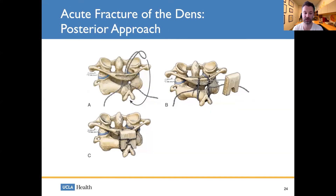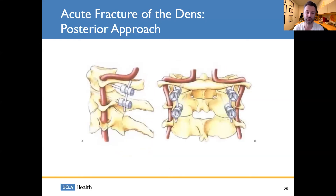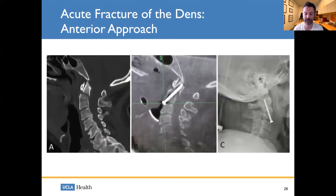It is important for these fractures to heal well. For internal fixation, the tried-and-true approach is wiring of C1 and C2 lamina with a piece of iliac crest bone in between, known as the Gallie fusion. A C1-C2 Harms fusion uses screws in the C1 lateral mass and C2 pedicle connected with a rod and bone placement. Finally, in certain younger patients, an odontoid screw through an anterior approach is a satisfactory treatment as well.